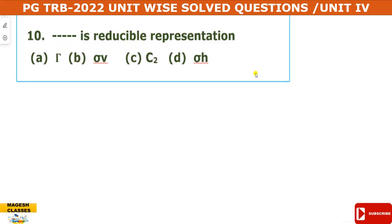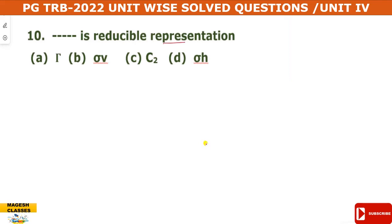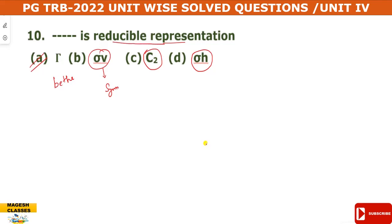The next question: what are reducible representations? This is related to group theory notation — specifically called Mulliken notation. The sigma-v symbol relates to symmetry operations, and the axis of rotation is a symmetry operation. The reducible representation is expressed using Mulliken notation, with symbols such as A1 and A2.